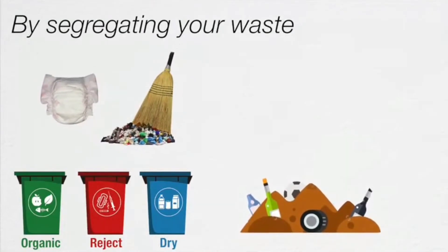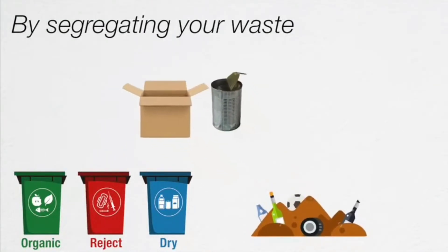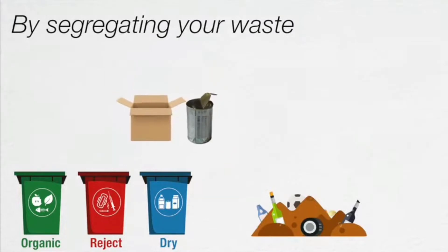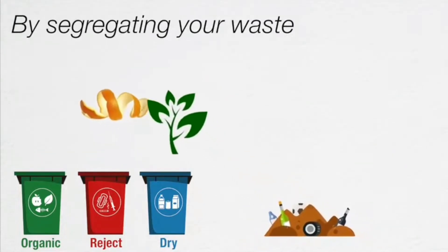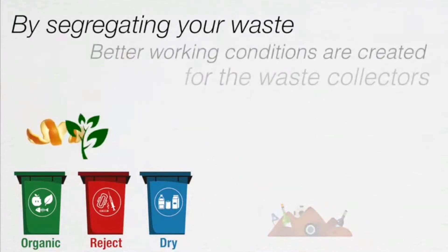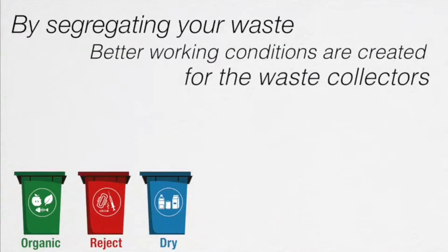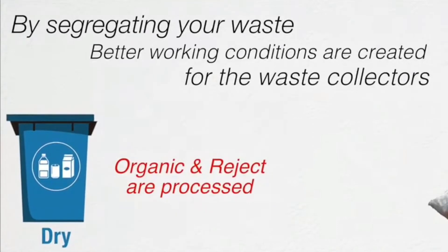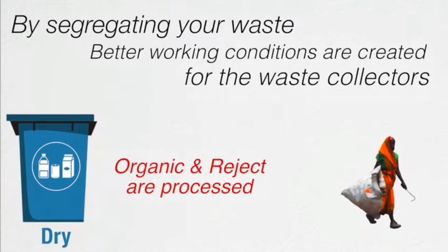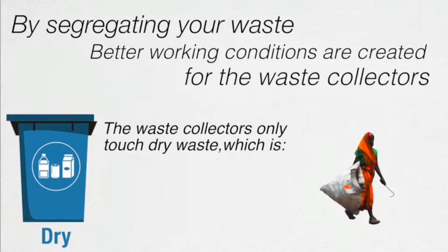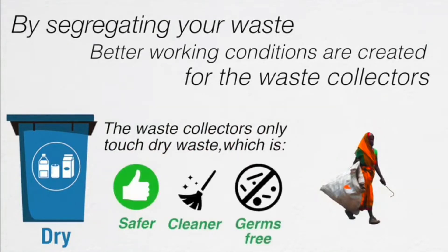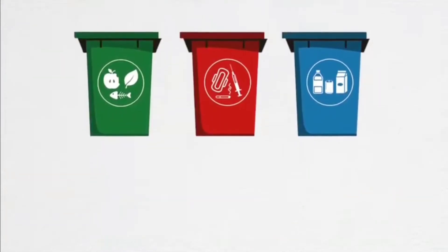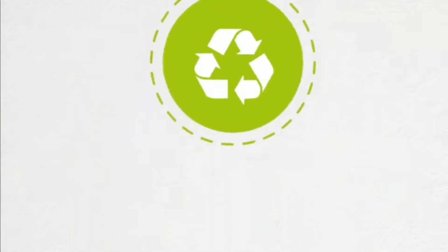By segregating, we can help reduce the garbage in landfills. For example, tin cans and cardboard go in the dry waste, while orange peels and leaves go in the organic waste. Better working conditions are also created for waste collectors, as they only need to touch dry waste.